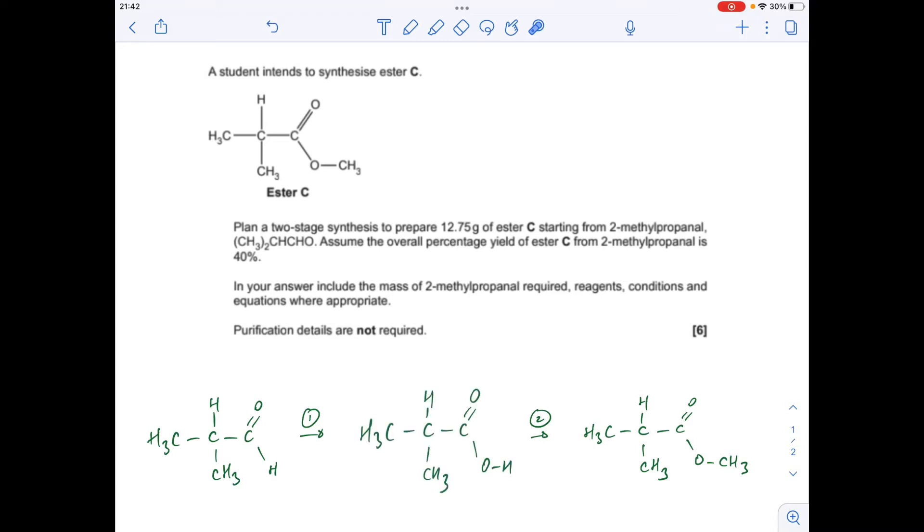If we think about the two steps that we've got to carry out, to go from an aldehyde to a carboxylic acid we've got to oxidize it. The oxidizing agent we're going to use is acidified potassium dichromate(VI) or acidified dichromate ions, and obviously we need a heat source to do that.